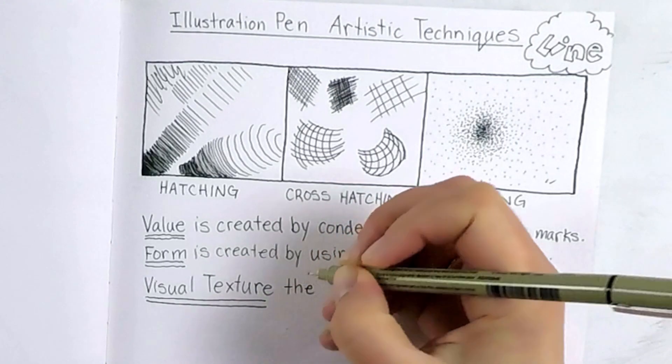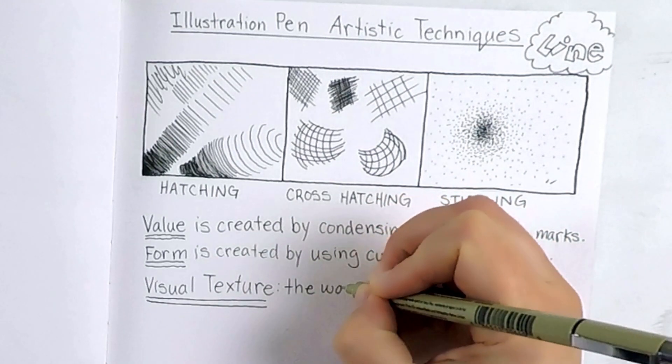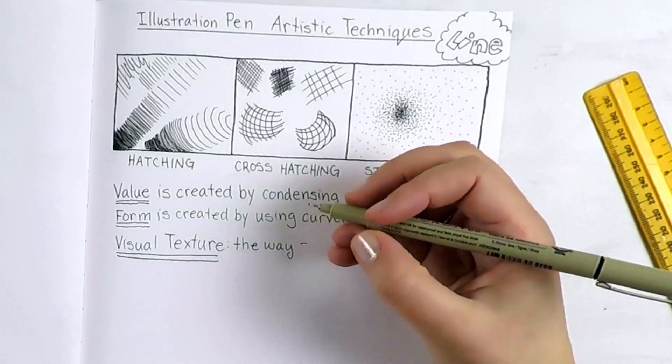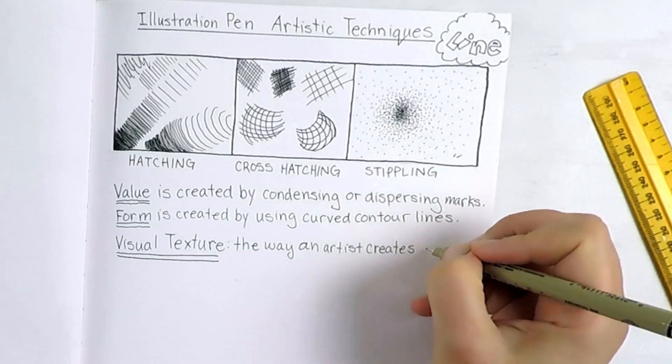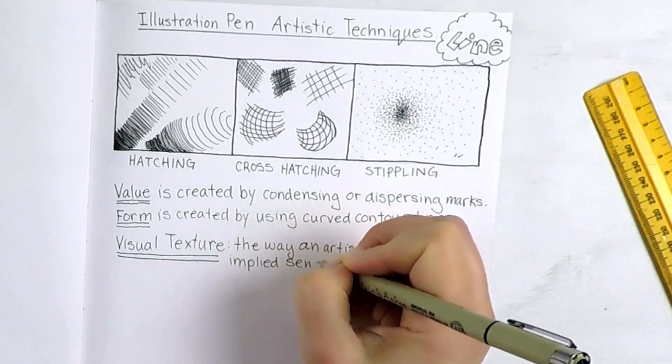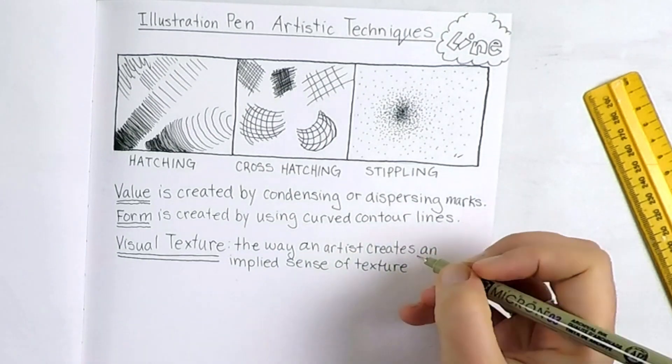Texture is an element of design where you create the illusion of how something would feel if you imagined touching it. Trying to create that illusion of fur, feathers, scales, all that sort of stuff, is quite a skill to develop.